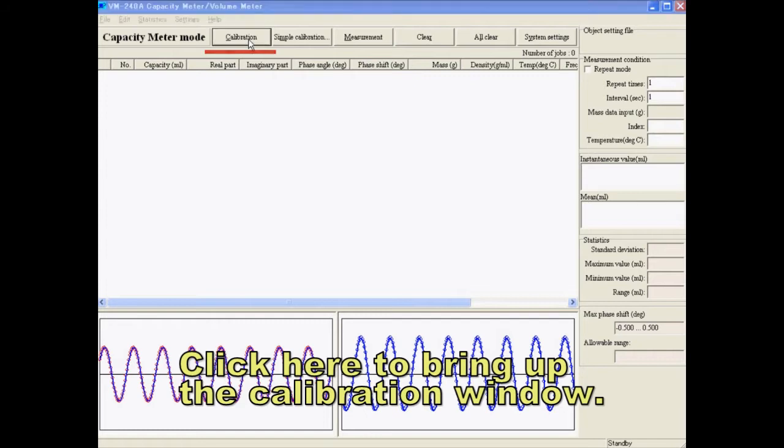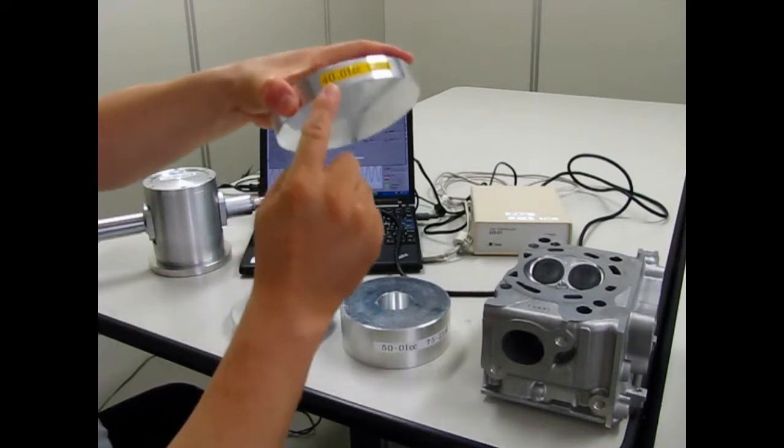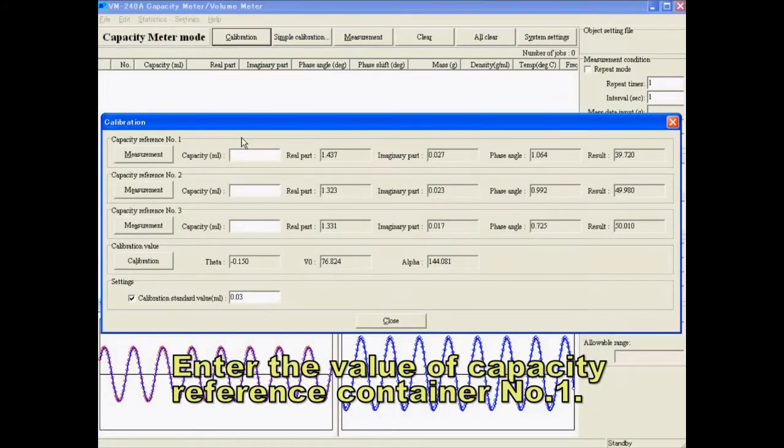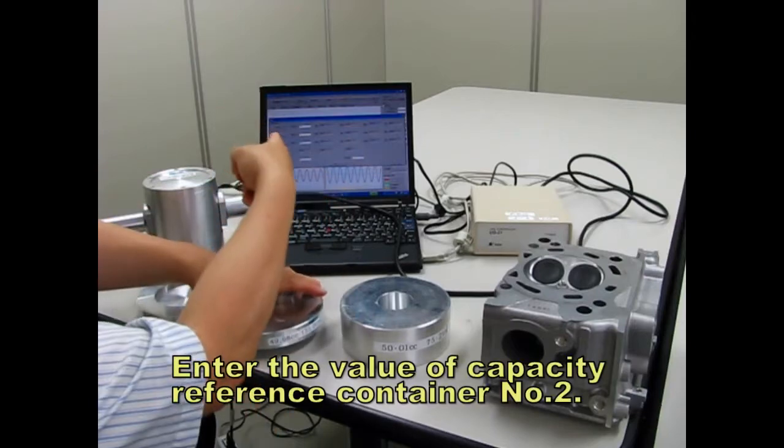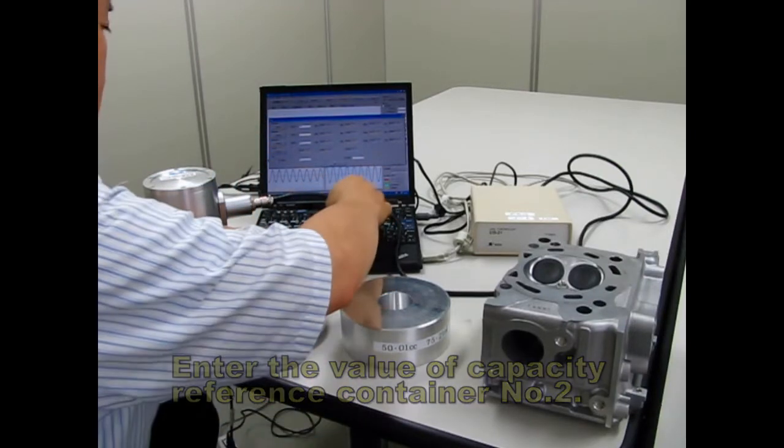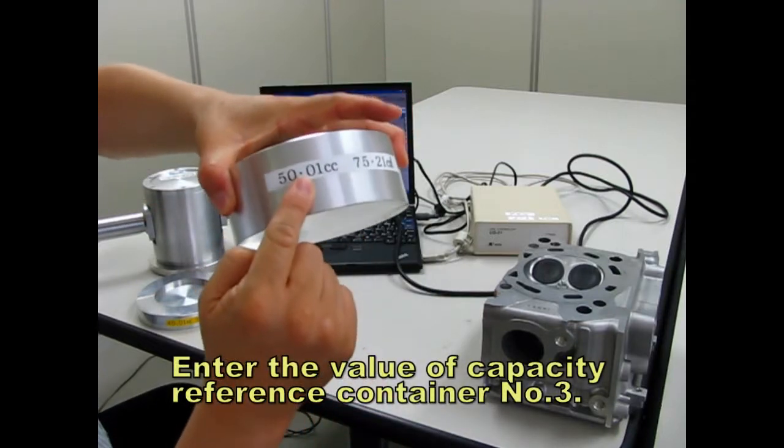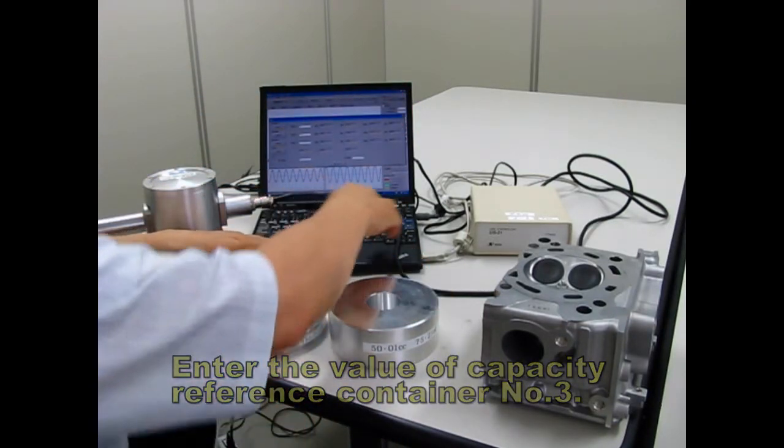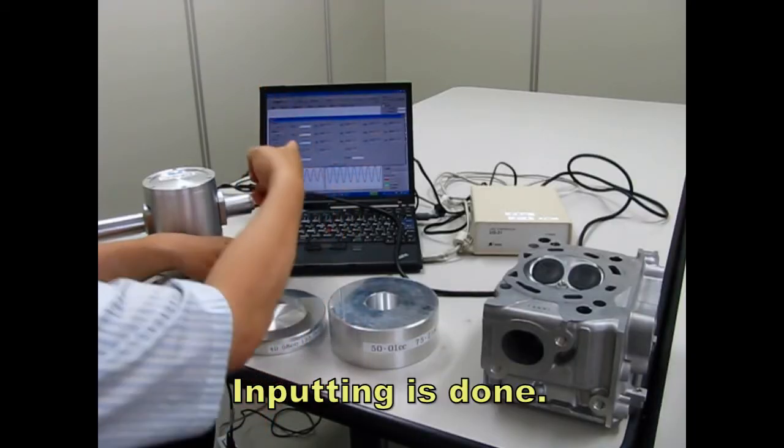Click here to bring up the calibration window. Enter the value of capacity reference container number one. Enter the value of capacity reference container number two. Enter the value of capacity reference container number three. Inputting is done.